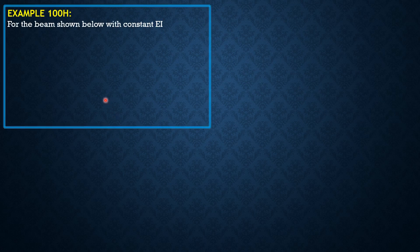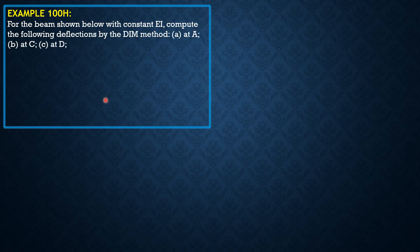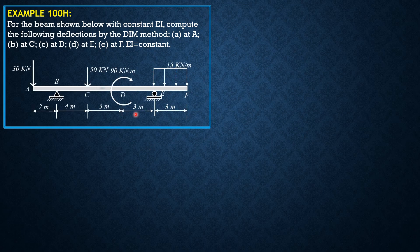For the beam shown below with constant EI, compute the following deflections by the double integration method: at A, at C, at D, at E, and at F. Use only the double integration method. This is the figure.